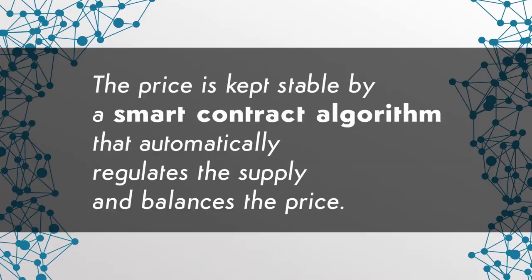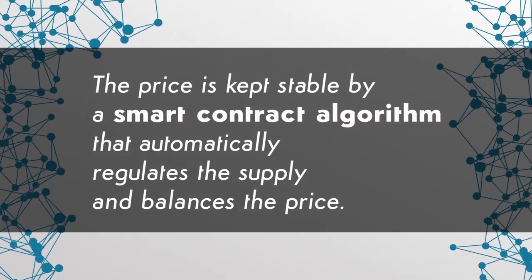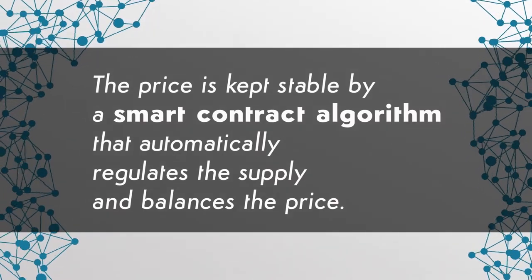The third and probably the most interesting type are non-collateralized stablecoins. These coins are not backed by anything and rely entirely on their inherent or perceived value. The price is kept stable by a smart contract algorithm that automatically regulates the supply and balances the price. It is not too different from what central banks do for fiat currencies, with the main difference being decentralization and automation.